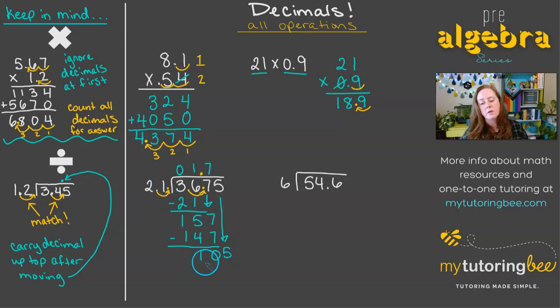And then let's drop down our 5. 21 can go into 105. Let's see, 2 can go into 10 five times. So I'm going to try that. So 5 times 1 is 5. 5 times 2 is 10. And then we subtract. It comes out evenly. So we get 1.75.